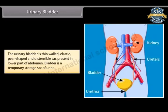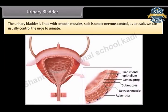The urinary bladder is thin-walled, elastic, pear-shaped, and a distensible sac present in the lower part of the abdomen. It is a temporary storage sac of urine. The urinary bladder is lined with smooth muscles, so it is under nervous control. As a result, we can usually control the urge to urinate.